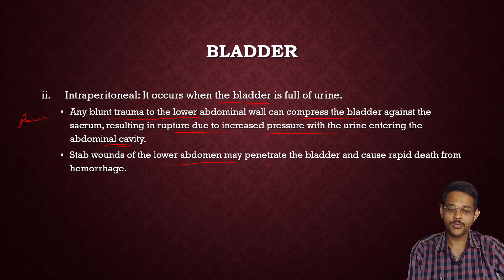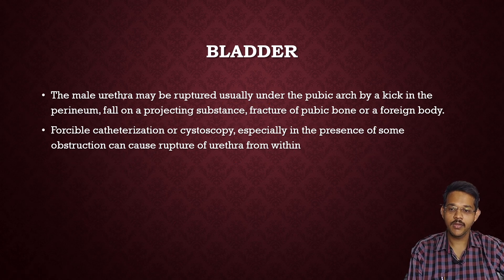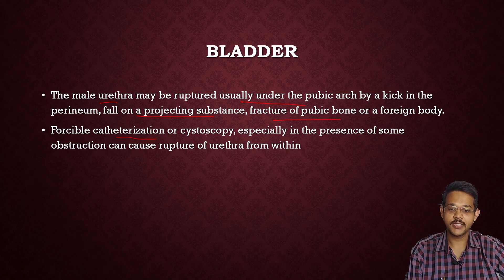Stab wounds of the lower abdomen may also penetrate the bladder and cause rapid death from hemorrhage. The male urethra may be ruptured usually under the pubic arch by a kick in the perineum, fall on the perineum, fracture of the pubic bone, or foreign body. Forcible catheterization or cystoscopy, especially in the presence of obstruction like a stone, can cause rupture of the urethra from within.